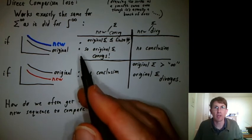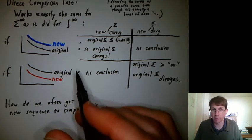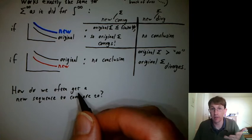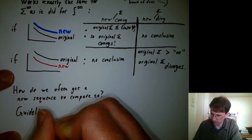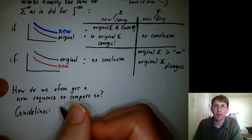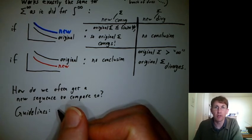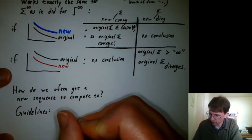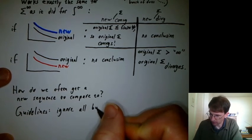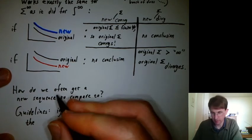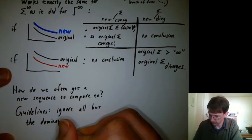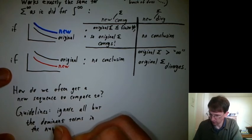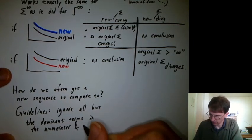Then the other question is, when we have an original sequence, how do we come up with a new sequence to compare it to? And there's not always only one right answer, but there's some general guidelines. So let's say these are some guidelines. We usually want to take whatever the dominant term is in the numerator and whatever the dominant term is in the denominator and ignore everything else in the numerator, ignore everything else in the denominator. So we'll say ignore all but the dominant terms, and we'll say what that means in just a sec, in the numerator and denominator separately.